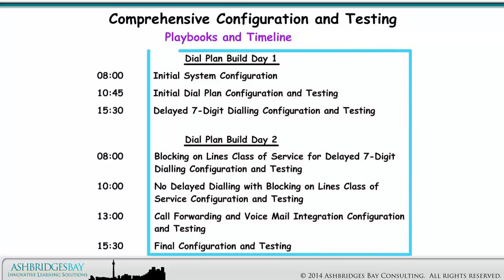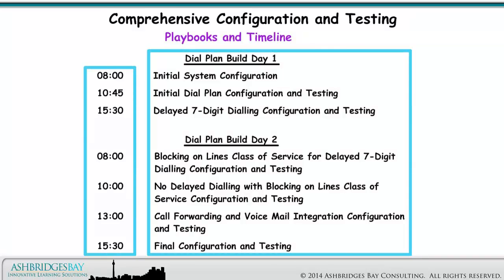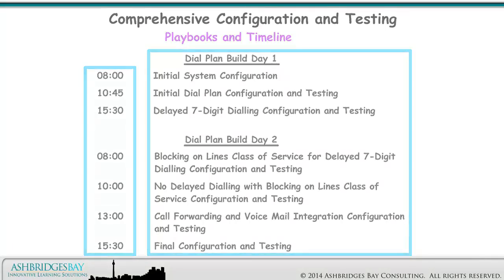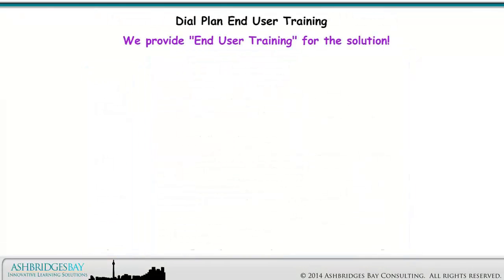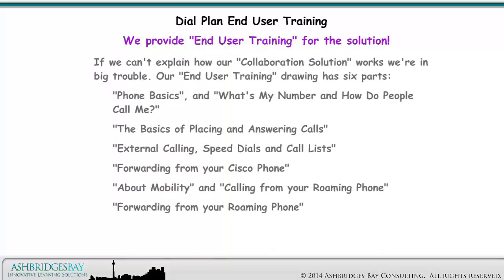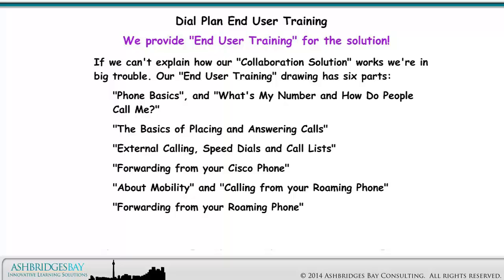Here are the playbooks and the timeline. We provide end user training for the solution — if we can't explain how our collaboration solution works, we're in big trouble. Our end user training covers six parts: phone basics and what's my number and how do people call me; the basics of placing and answering calls; external calling, speed dials and call lists; forwarding from your Cisco phone; about mobility and calling from your roaming phone; and forwarding from your roaming phone.